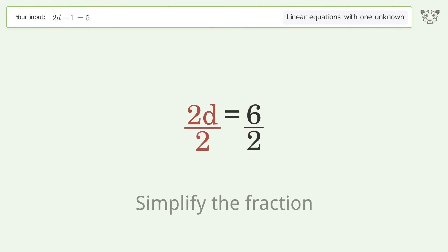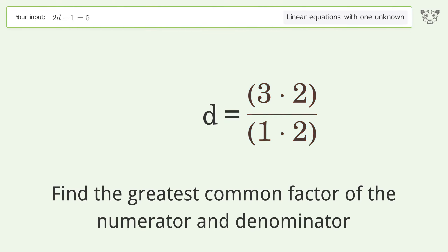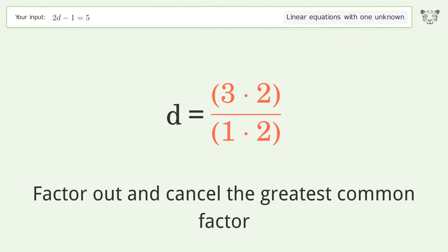Simplify the fraction by finding the greatest common factor of the numerator and denominator, then factor out and cancel the greatest common factor.